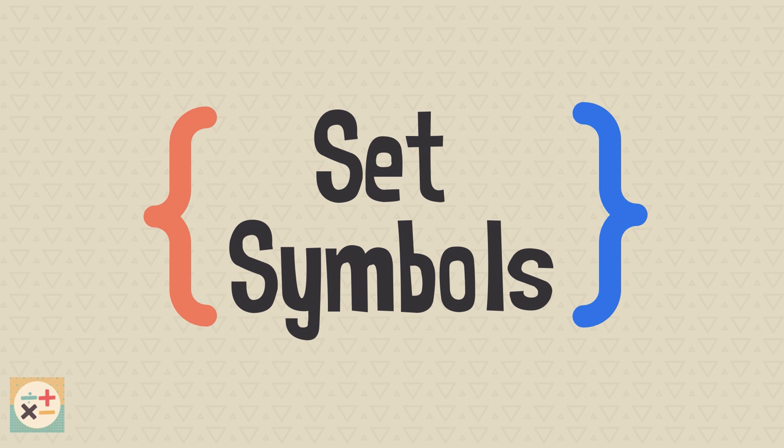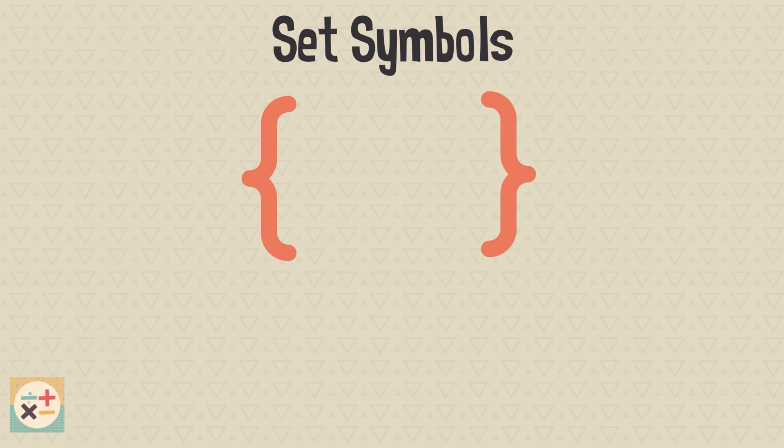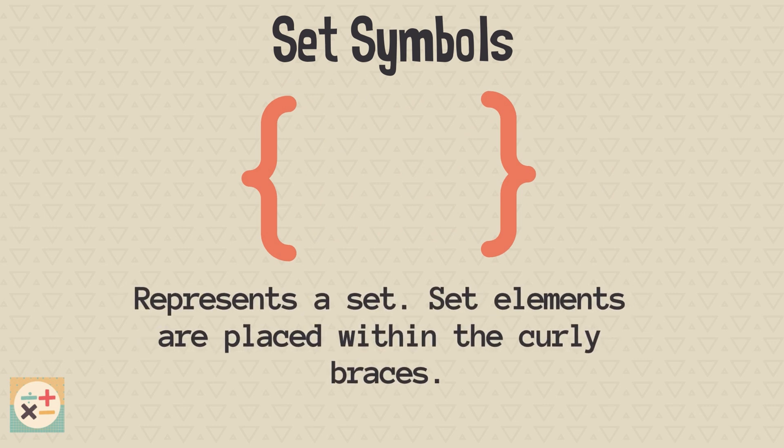Set notation is a powerful tool that helps mathematicians describe relationships between elements and sets. Whether you're working with numbers, letters, or any other objects, these symbols will be your guide. The most common symbol used in set notation is the curly brace. These are used to represent a set. Set elements are placed within the curly braces.